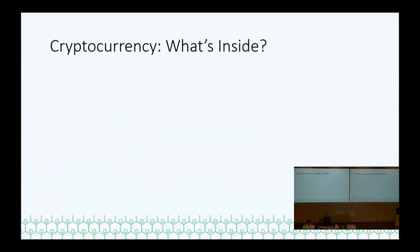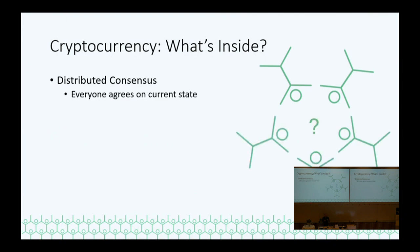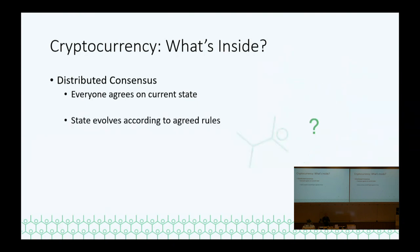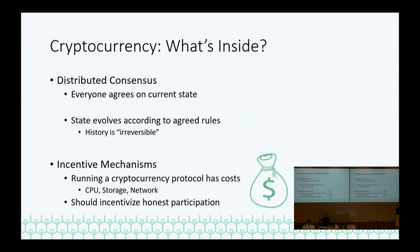That was the summary — feel free to nod off. I'll start with a brief overview of what's a cryptocurrency. It's based on distributed consensus: everybody has to agree on the current state of the world, where the money is. This state has to evolve according to pre-agreed rules. One of those rules is that history is irreversible — if I sent somebody money, I can't say tomorrow that I didn't. And there are incentive mechanisms allowing this cryptocurrency to work in a distributed setting with rational actors — some way to cause people to join the system and incentivize them to do the right thing.